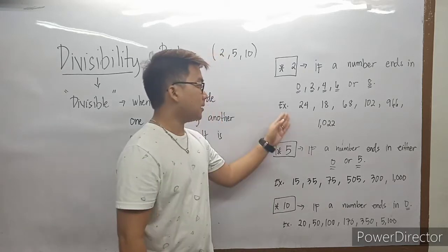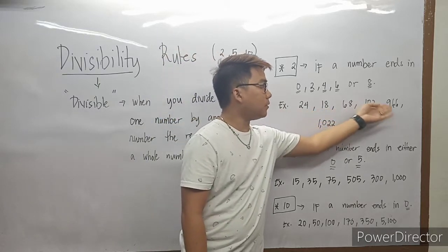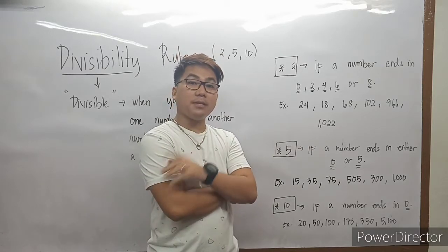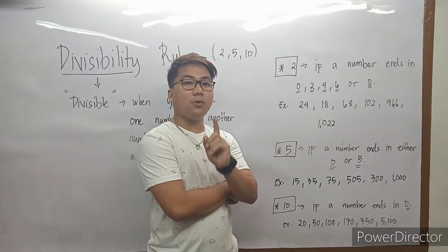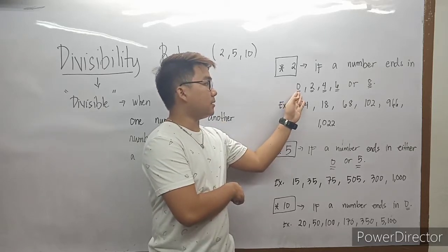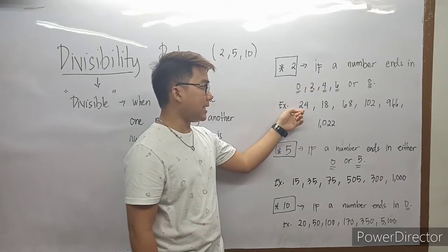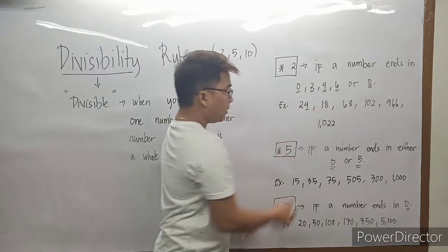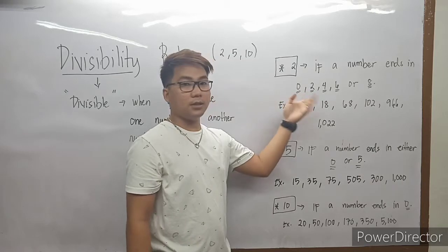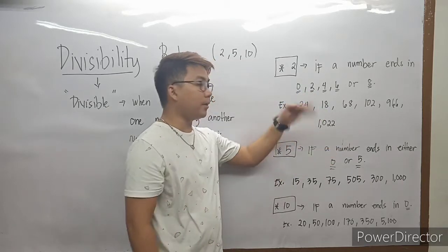Magbigay tayo ng examples: 24, 18, 68, 102, 966, at 1,022. Tingnan natin kung divisible by 2 — titignan lang natin yung last digit ng bawat number, then titignan natin kung pasok ba sa 0, 2, 4, 6, or 8. So, 24 — ang last digit ay 4, which is even, pasok sa listahan. So, 24 is divisible by 2. Next, 18 — last digit is 8, divisible by 2. Next, 68 — last digit is 8, 68 is also divisible by 2.